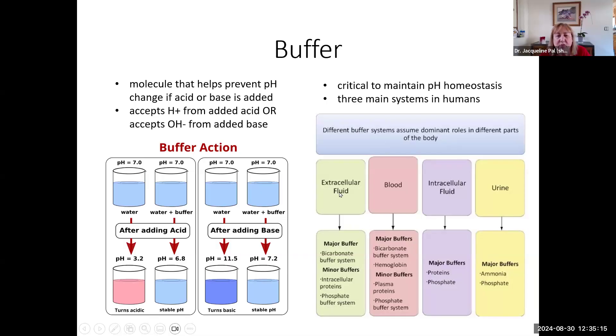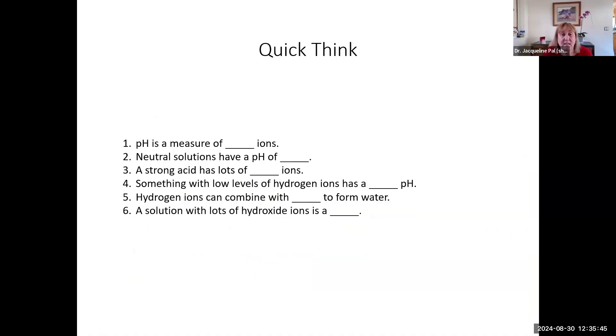In our extracellular fluid, in other words, outside of our cells, including in our blood, we have a major buffer system that works there. Inside of our cells, we have two different buffer systems that work. And then we have different systems that work in our urine to return substances back into our blood to keep us in a normal pH homeostasis. So here I have some quick think questions for you to stop this video and see if you can answer these questions.